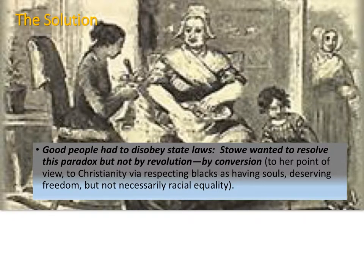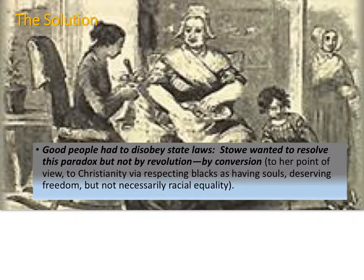The solution: good people had to disobey state laws. Stowe wanted to resolve this paradox, but not by revolution and rebellion — by conversion: to her point of view, to Christianity, via respecting blacks as having souls and deserving freedom, but not necessarily racial equality, as we discussed in the last lecture.